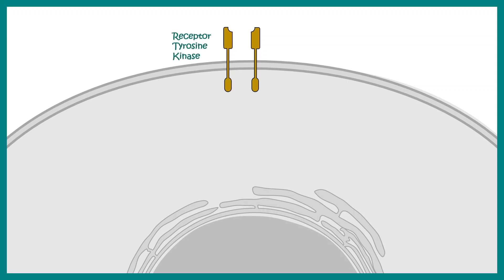The MAP kinase pathway is initiated at the receptor level. The receptors responsible for the signal transduction are cell surface receptors known as receptor tyrosine kinases, because they have an intrinsic tyrosine kinase activity. The ligands for these receptors are mitogens or growth factors.